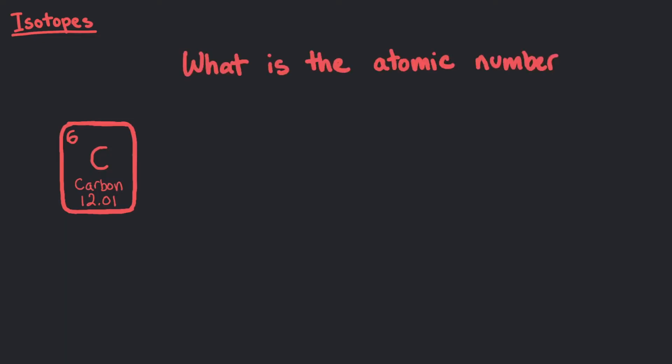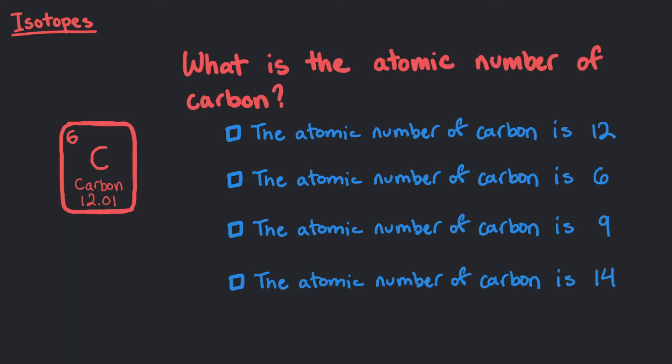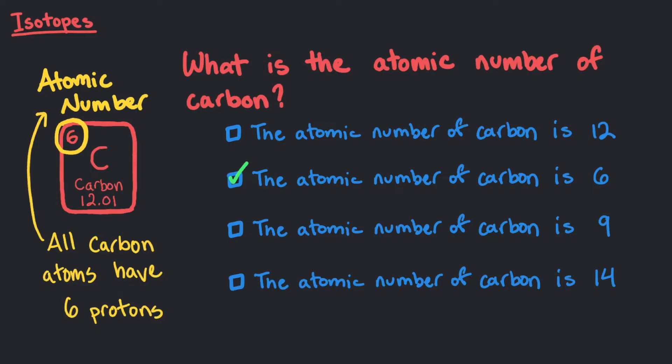What is the atomic number of carbon? That's right, carbon has an atomic number of 6. Atoms of the same element all have the same atomic number, meaning they all have the same number of protons.